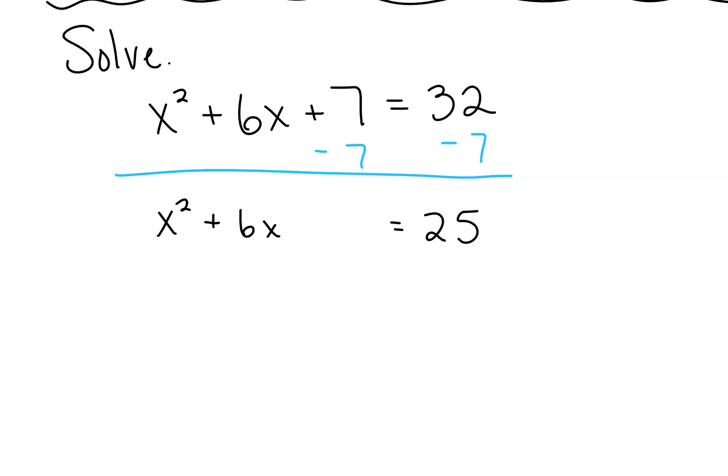Subtract the 7 from both sides. You see how I just left some space in the middle there? Because now I'm going to do that completing the square. What would c need to be here in order for this left-hand side to be a perfect trinomial? 9, because we take that 6, half of 6 is 3, 3 times 3 is 9. So I would, in a separate color, add 9 to both sides of the equation.